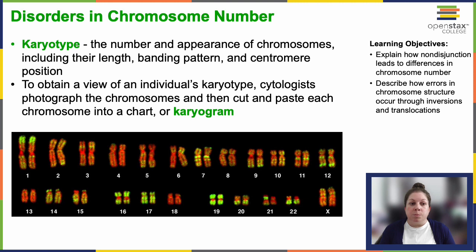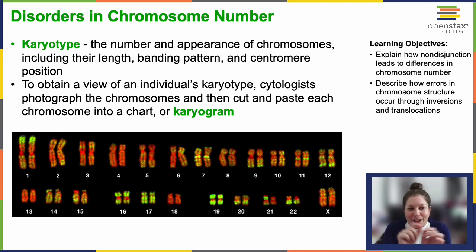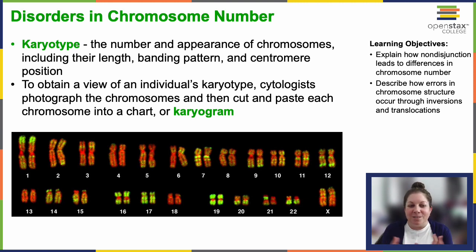Cytologists — people who study cells — will photograph the chromosomes individually and then create this image like you see here on the slide by cutting and pasting each chromosome into a chart to visualize an individual's karyotype. The chromosomes don't cooperate and line up so nicely; it requires lots and lots of images to get all of it and put it together like that.